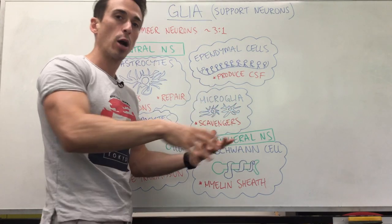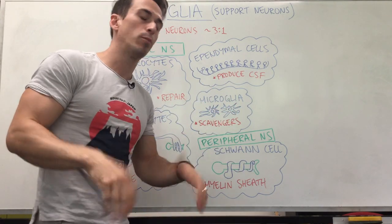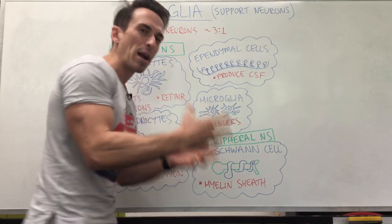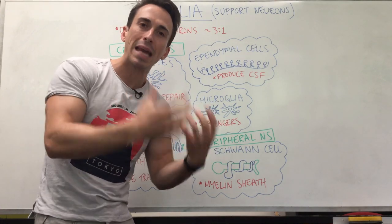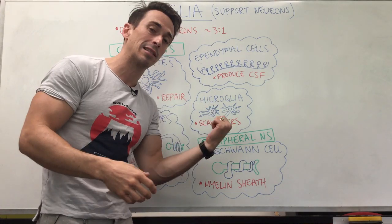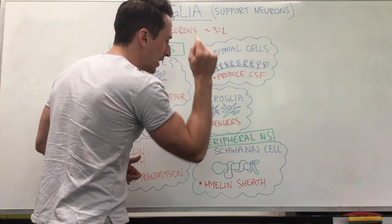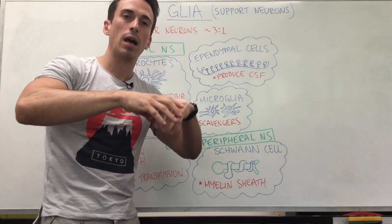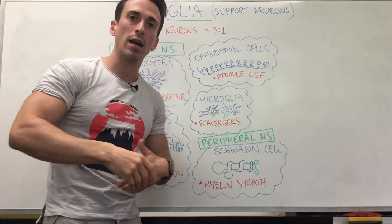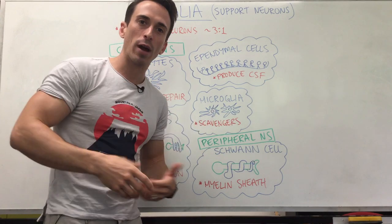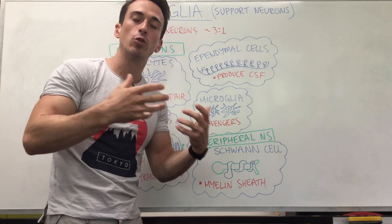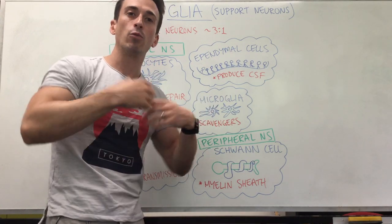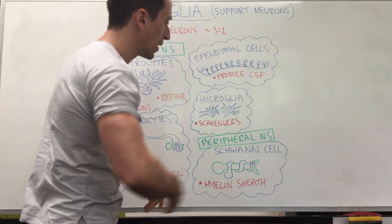Microglia — micro meaning small — are the small supporting cells of the central nervous system. They're like macrophages, big eaters, but in this case they're small and they scavenge. Any cells that have been broken down, degenerated, or anything that shouldn't be there — they play a role in scavenging and recycling those products.